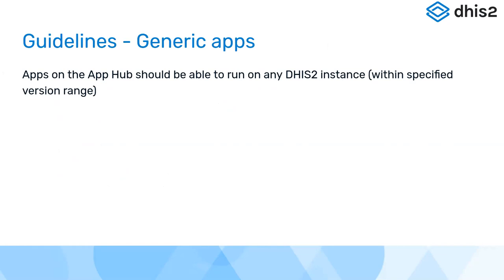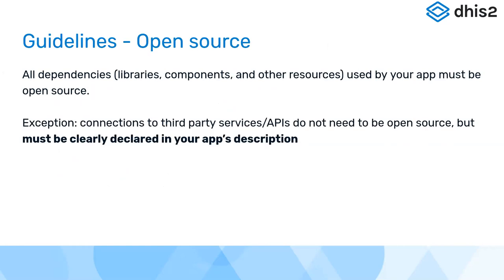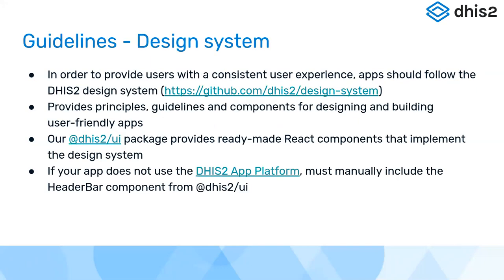Another guideline is that apps should be generic — they should work on any DHIS2 instance within their specified version range, without any custom implementation dependencies or similar. Your dependencies should all be open source with correct licenses. The one exception is if you communicate with third-party services — those don't have to be open source, but please mark it very clearly in your app description that you communicate with third-party services.